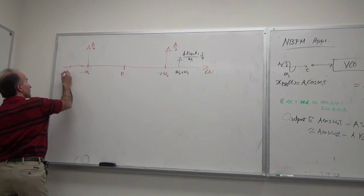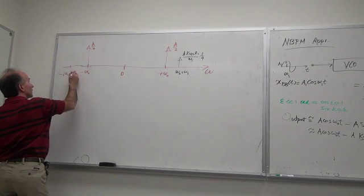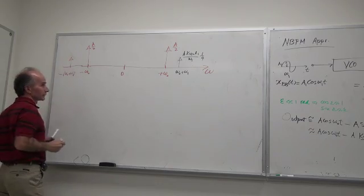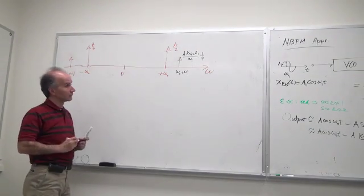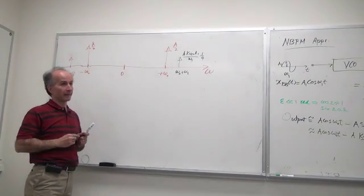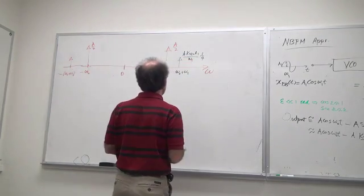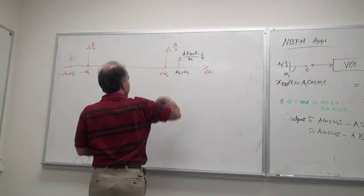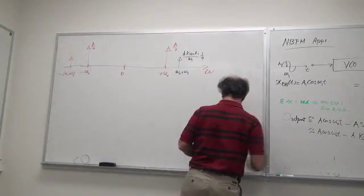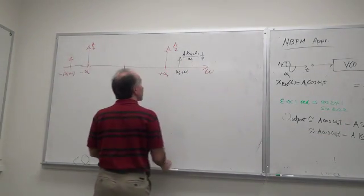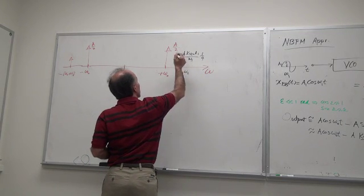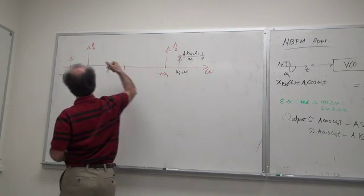So on this side it's minus omega zero plus omega one, and the same story. Okay sorry, yes that should be negative so we should draw this downward because there's a negative sign here. Let me just put a negative sign here so that you remember this impulse should be pointing downward.